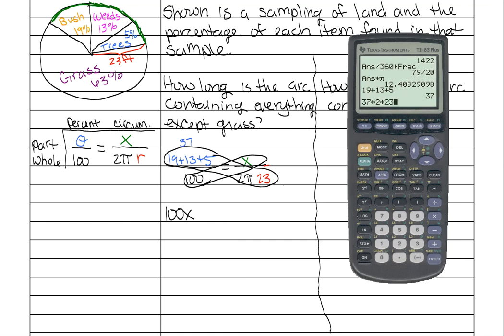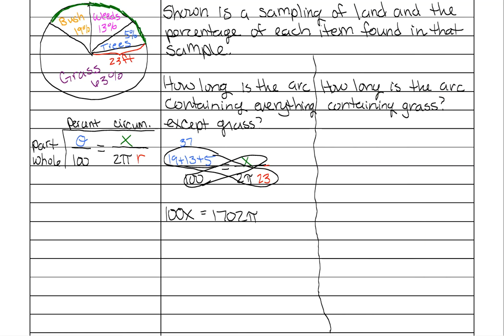And then 37 times 2 times 23 gives us 1702. And don't forget your pi. Then divide both sides by 100. Left side cancels. Reduce the right side with math, enter, enter,